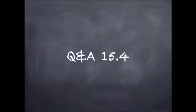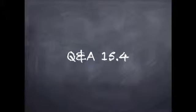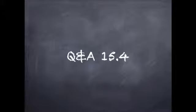Gary's demand for doctor's visits depends on his health. Half the time his health is good and his demand is D1 in the figure. When his health is poor, his demand is D2. Gary is risk averse. Without medical insurance, he pays $50 a visit. With full insurance, he pays a fixed fee at the beginning of the year and the insurance company pays the full cost of any visit. With a contingent contract, Gary pays a smaller premium at the beginning of the year and the insurance company covers only $20 per visit, with Gary paying the remaining $30. How likely is a moral hazard problem to occur with each of these contracts? What is Gary's risk — the variance of his medical cost with no insurance and with each of the two types of insurance?